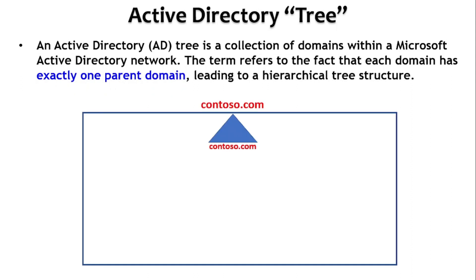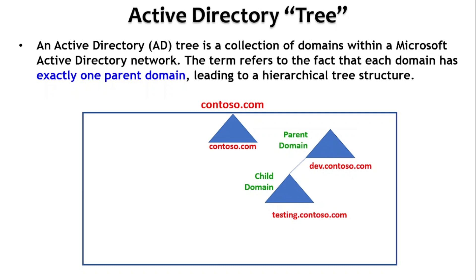For example, we have the contoso.com forest with a root domain contoso.com, and two more domains: dev.contoso.com and testing.contoso.com. So dev.contoso.com is a parent domain and testing.contoso.com is the child of dev.contoso.com. In one of our earlier videos we have seen the ways to configure a Windows Server — as a domain controller for a parent domain and as a domain controller for a child domain.